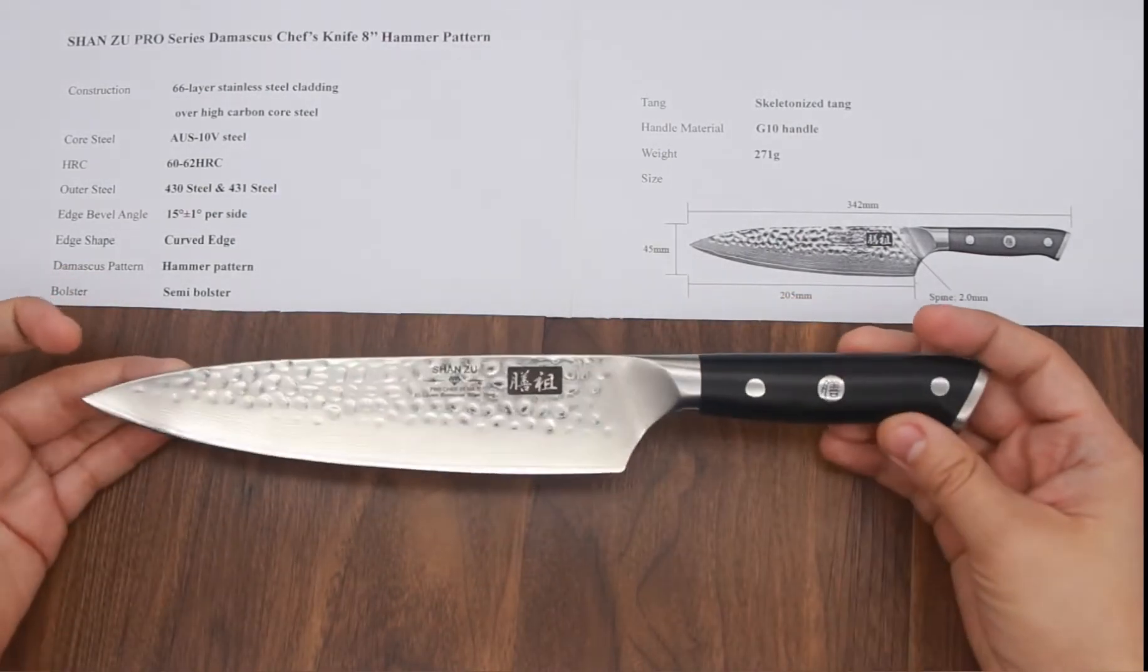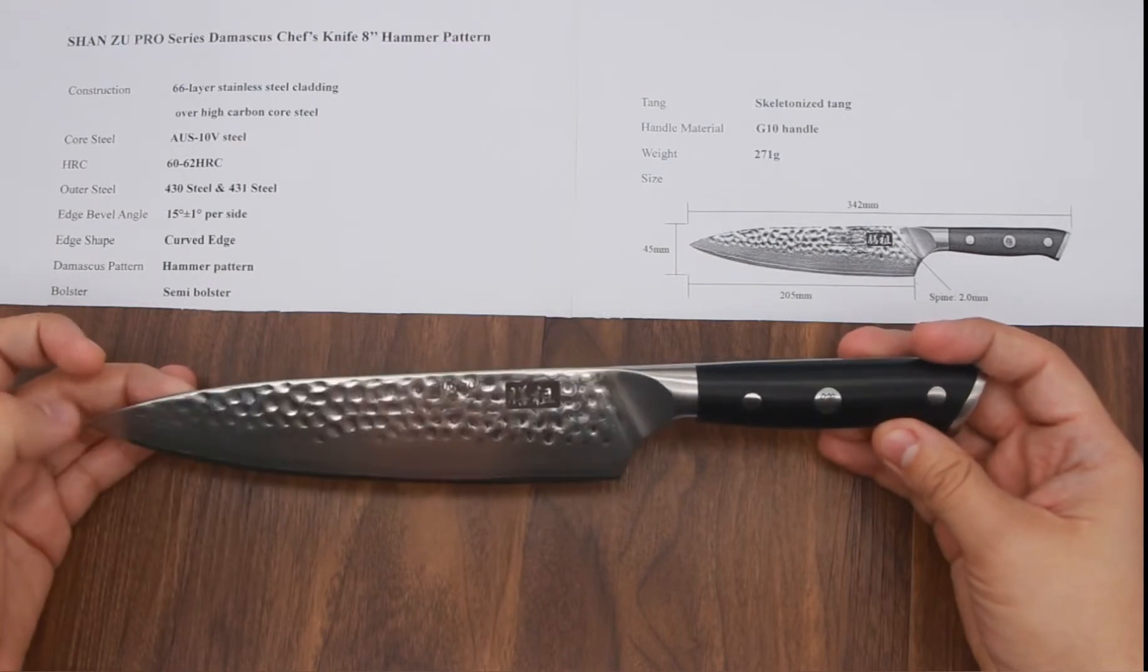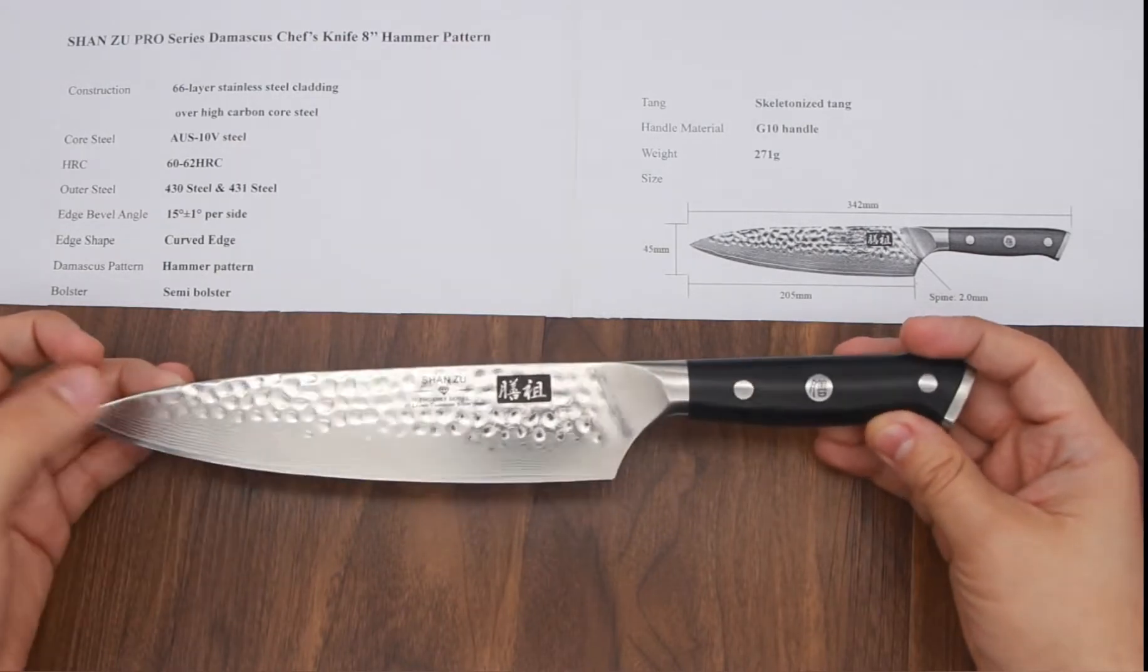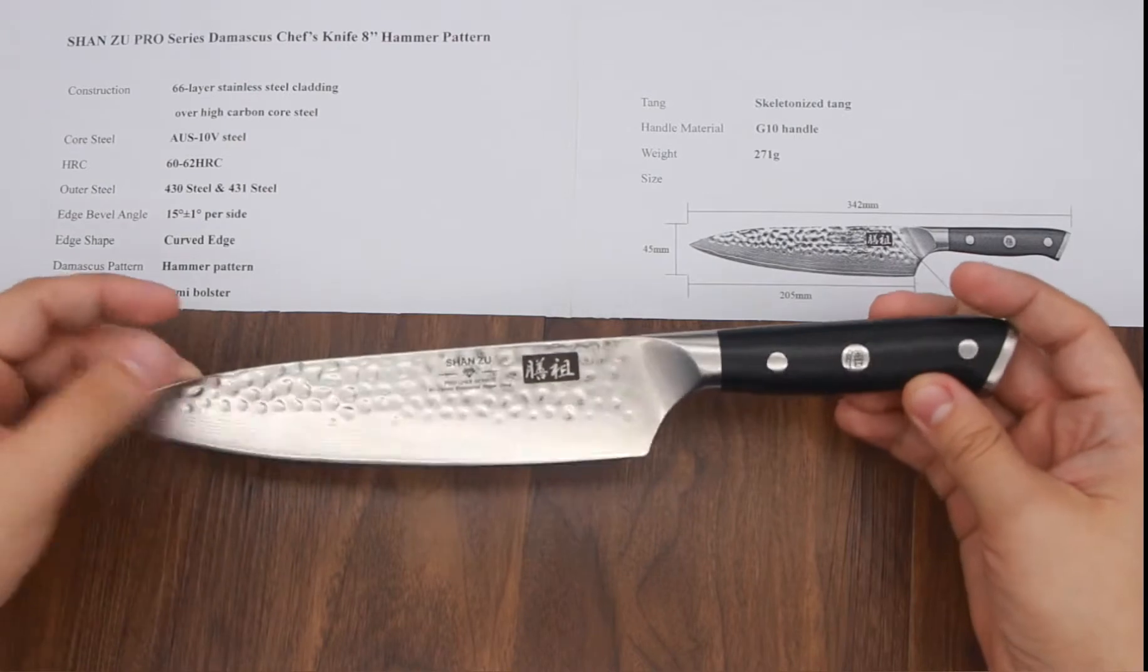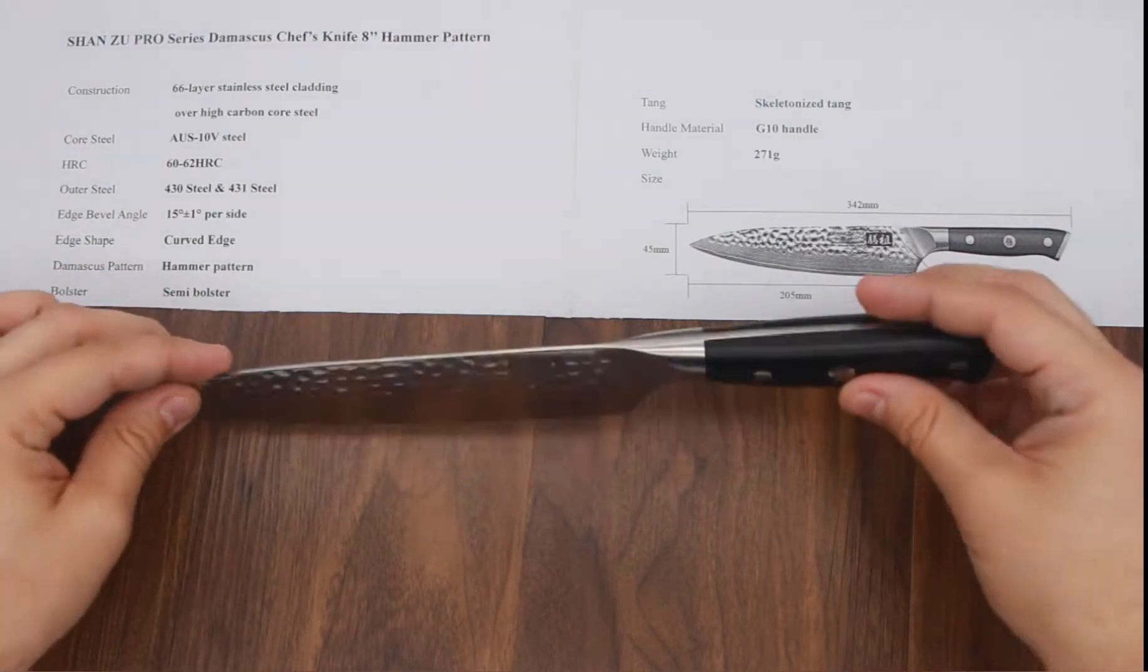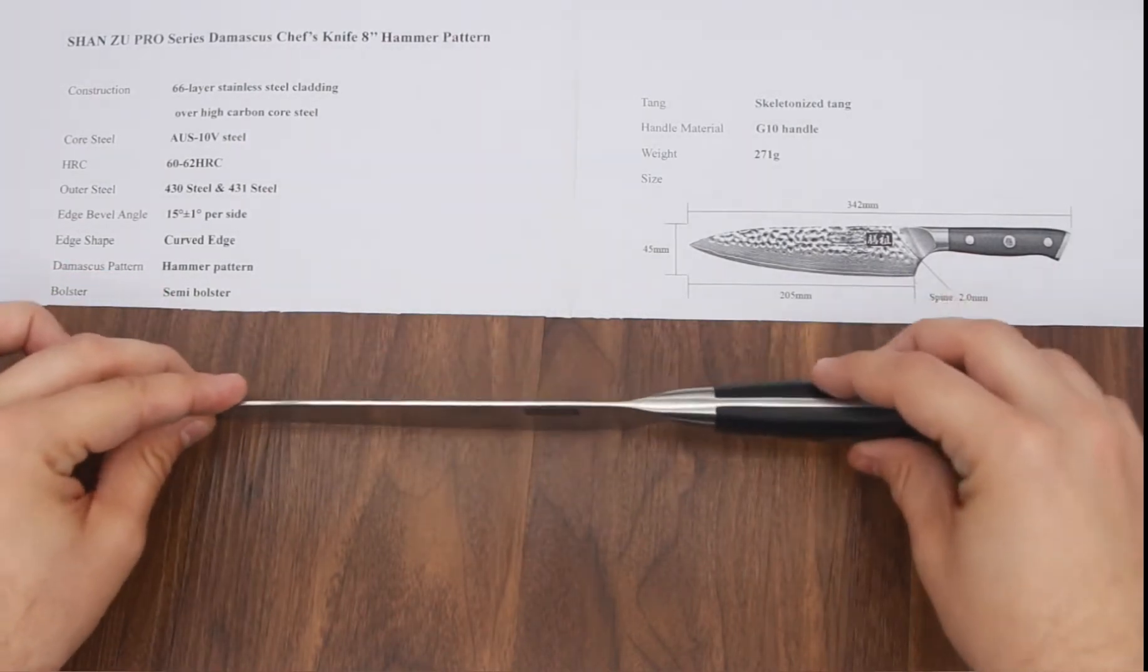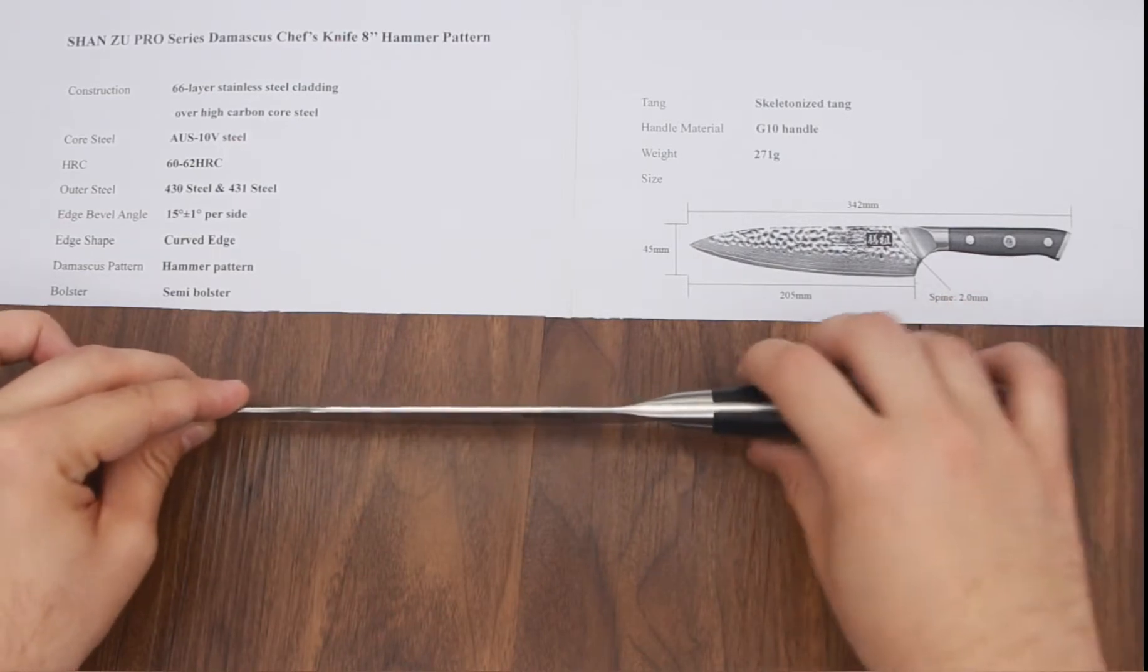And one thing you'll notice once you're holding this knife and you have it in your hand is that the curved belly that it has here, the curved edge, this gives it a very nice looking belly and it's really good for rocking and going up and down and just cutting through your food very smoothly and easily.